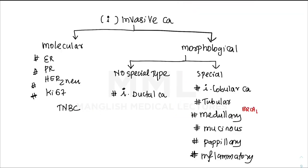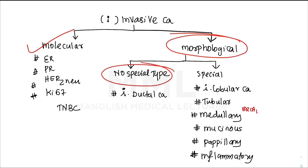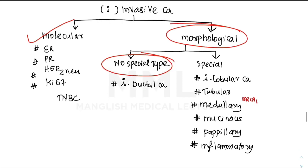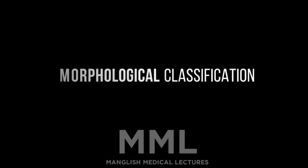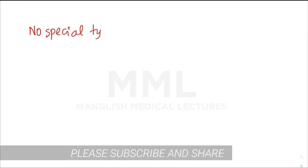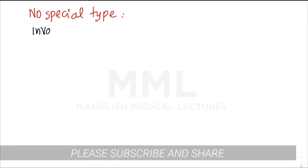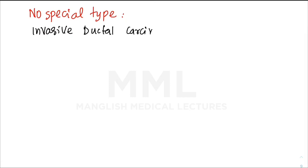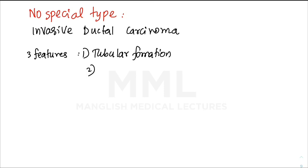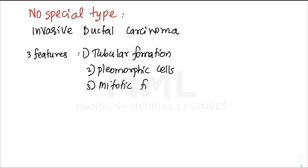We have now completed molecular classification. Moving to morphological classification, we start with the no-special-type: invasive ductal carcinoma. Three features to keep in mind for grading: rate of tubule formation, amount of pleomorphic cells, and number of mitotic figures.